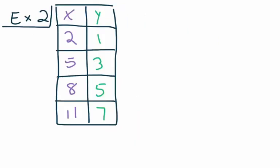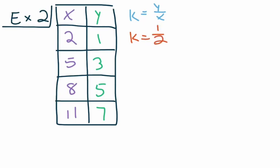For our second example, we have a vertical table, though we approach it the same way — still looking at Y over X. The first pair has X = 2 and Y = 1, so K = 1 over 2.